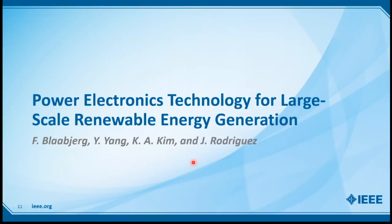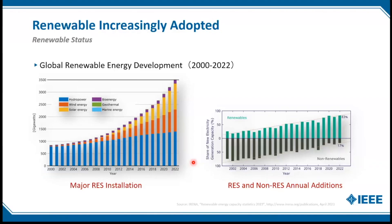One of the areas I will touch on is the generation of electricity through renewables. There is no doubt that renewable installations are moving at a rapid pace. To the left, you can see the total installed capacity of renewables rising significantly every year. To the right, you can see the distribution between non-renewable and renewable in terms of installed capacity per year, and 83 percent of new electrical capacity is coming from renewables. We are really in a major development.